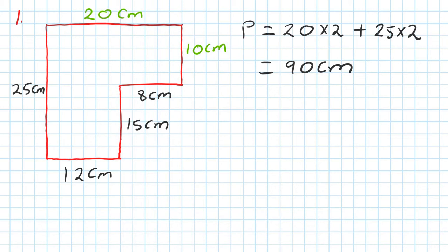Now to find the area. We've got three ways to do it. I'm just going to do one way. So you can cut the shape like this - you can find this area, area one, and find this area, area two.